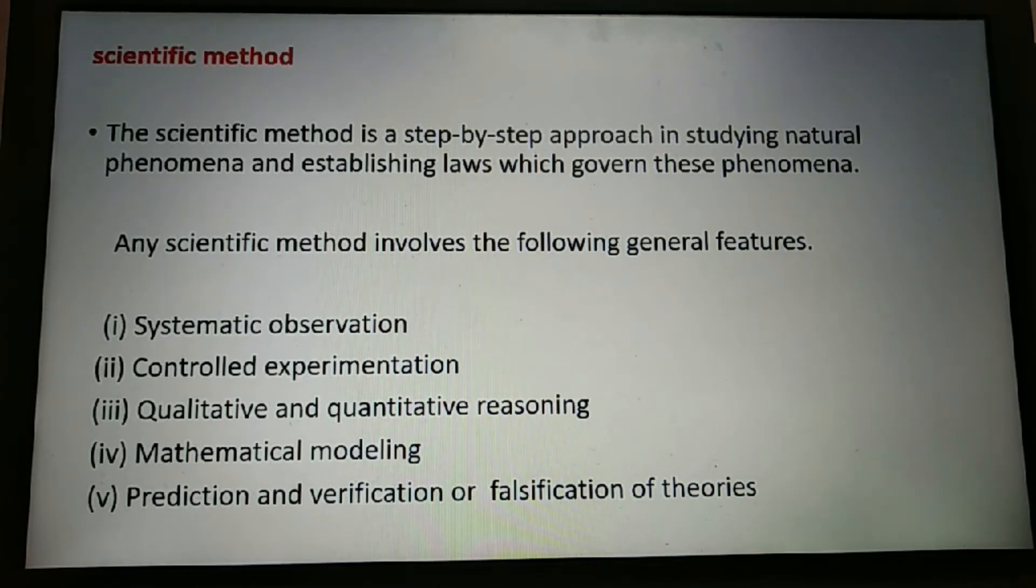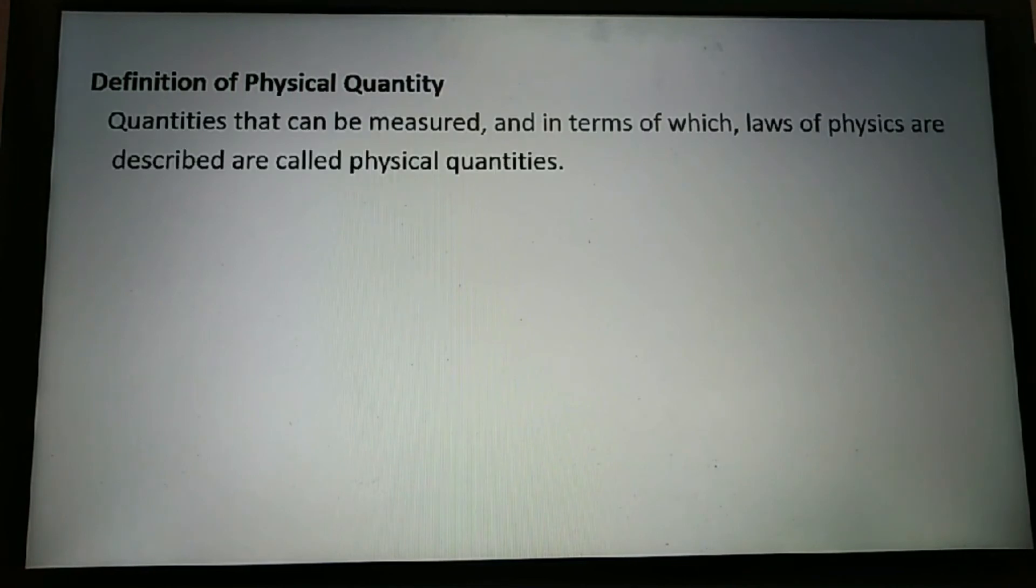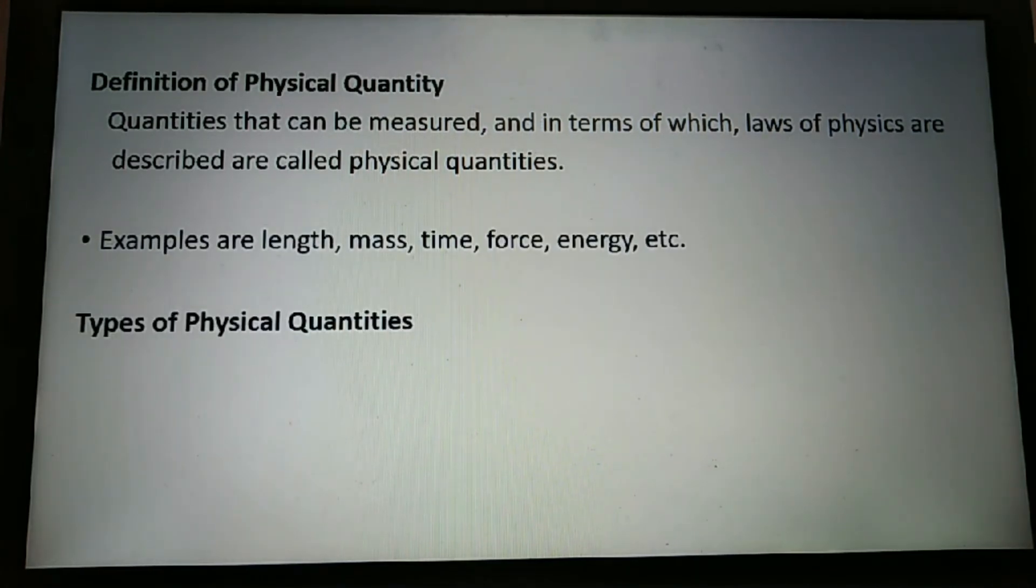There is a scientific method in which the laws of physics are described are called physical quantities. The quantities are called physical quantities. Examples: length, mass, time, force, energy, etc.